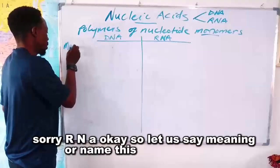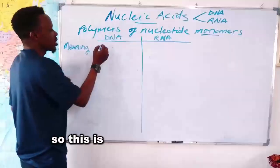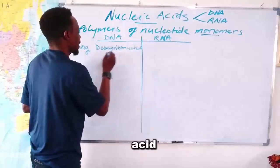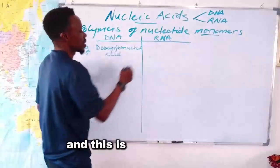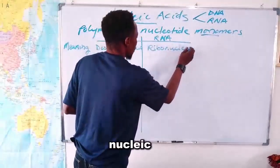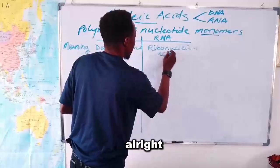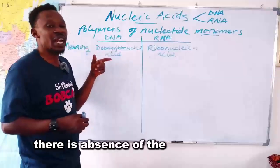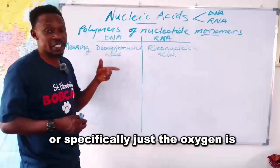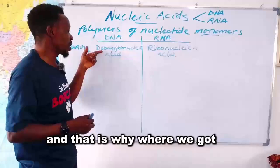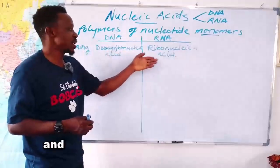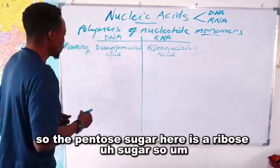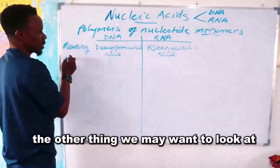In terms of name or meaning: DNA stands for deoxyribonucleic acid, while RNA stands for ribonucleic acid. DNA is called 'deoxy' because on the second carbon of the pentose sugar, the hydroxyl group is absent — specifically the oxygen is missing, leaving only hydrogen. RNA has the hydroxyl group, so its pentose sugar is ribose.